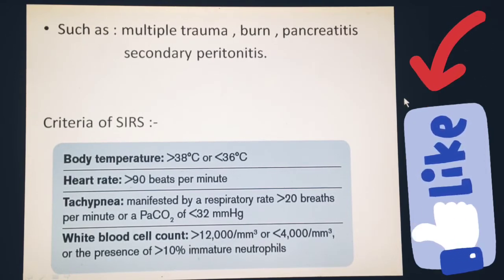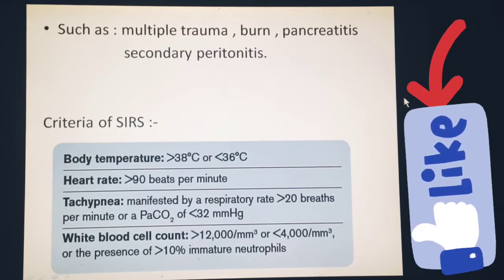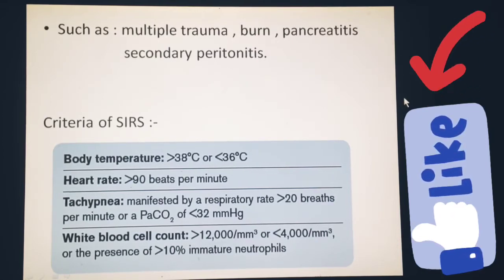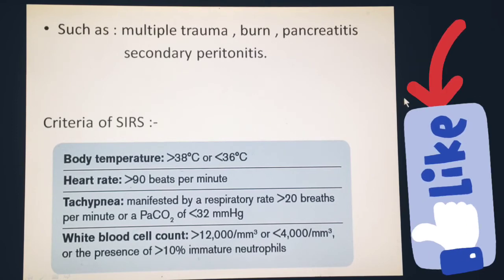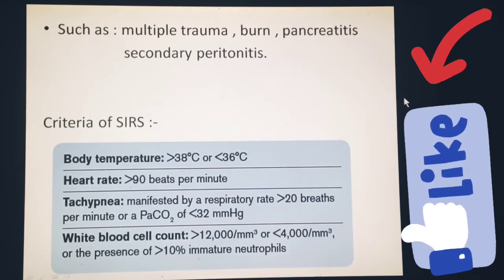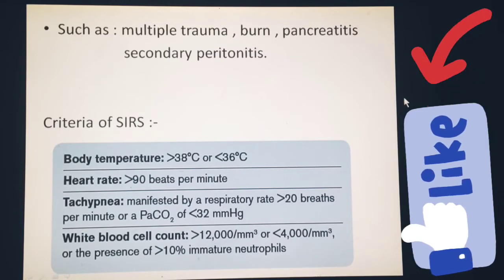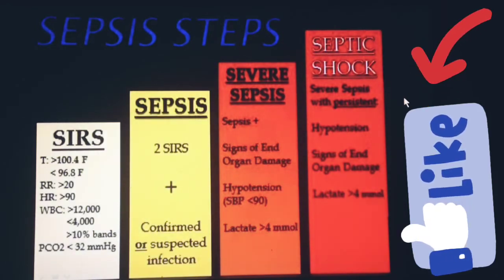SIRS is diagnosed based on four criteria. First, body temperature greater than 38°C or less than 36°C. Second, heart rate more than 90 per minute. Third, tachypnea with more than 20 breaths per minute or carbon dioxide pressure less than 32 mmHg. Fourth, white blood cell count greater than 12,000/mm³ or less than 4,000/mm³, or more than 10 percent immature neutrophils. If all four criteria are met, SIRS is present.